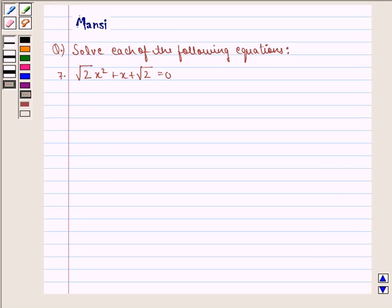Hello and welcome to the session. My name is Mansi and I am going to help you with the following question. The question here says, solve each of the following equations. Seventh equation is √2x² + x + √2 = 0.